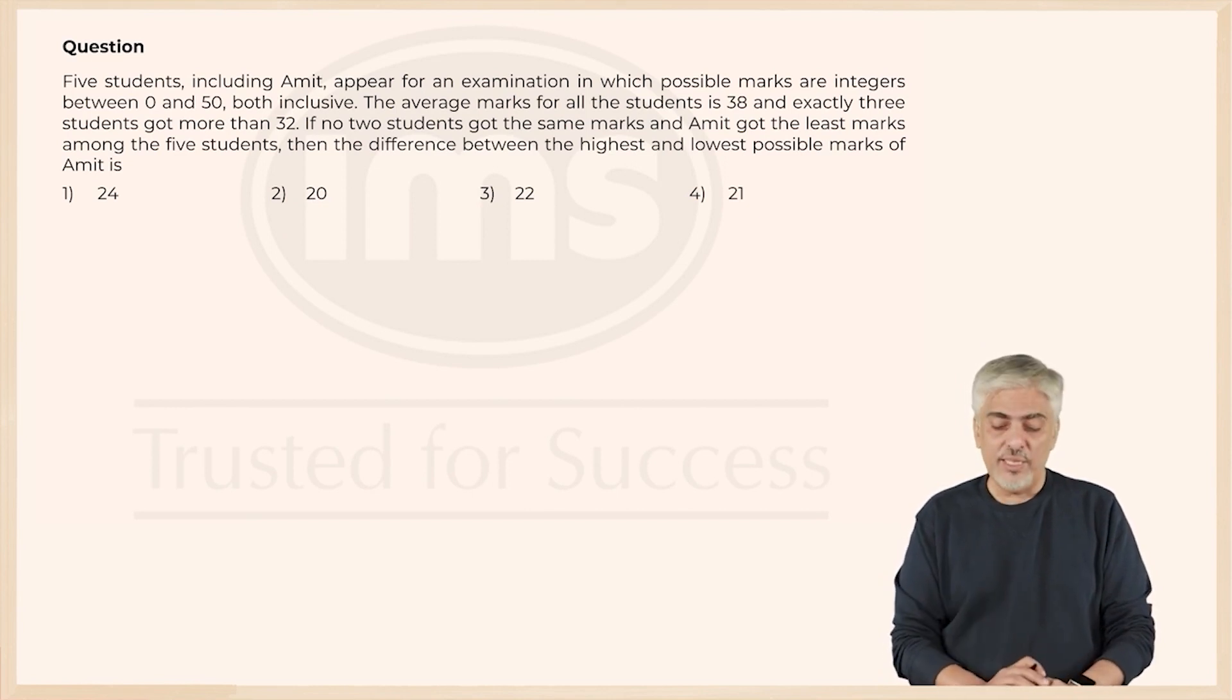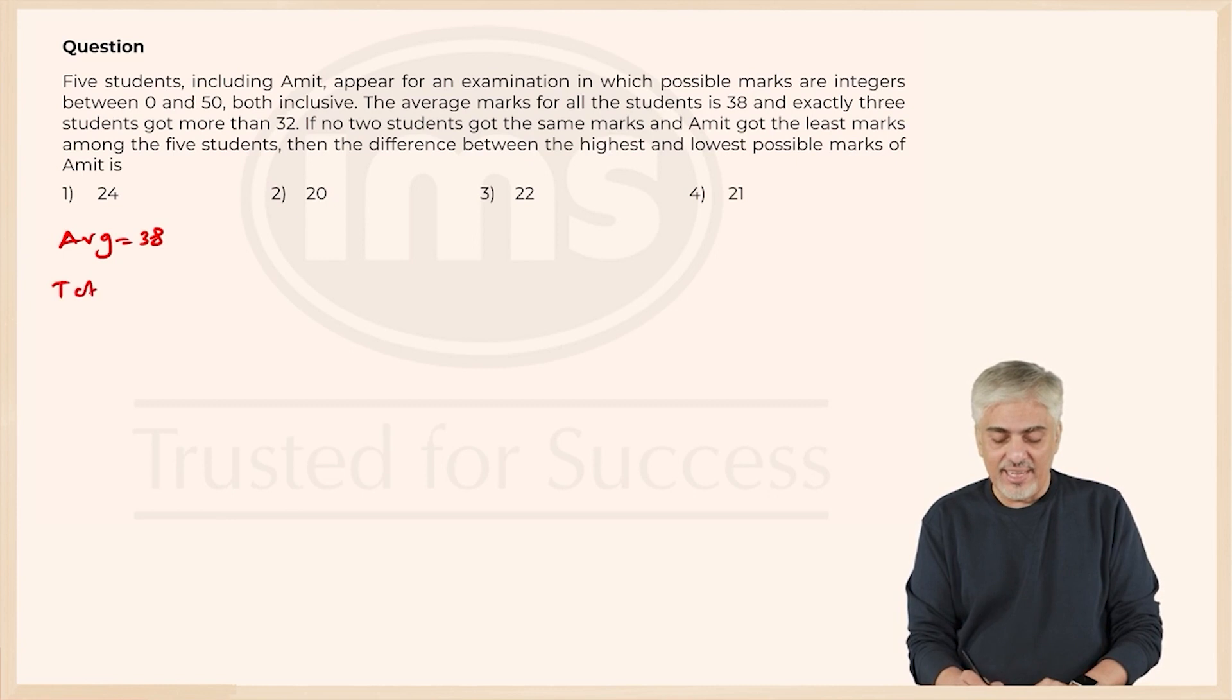5 students including Amit appear for an examination in which possible marks are integers between 0 and 50 both inclusive. The average marks for all the students is 38. So the average is 38, and because it is only 5 students, I just did my calculation for total also - total is 190.